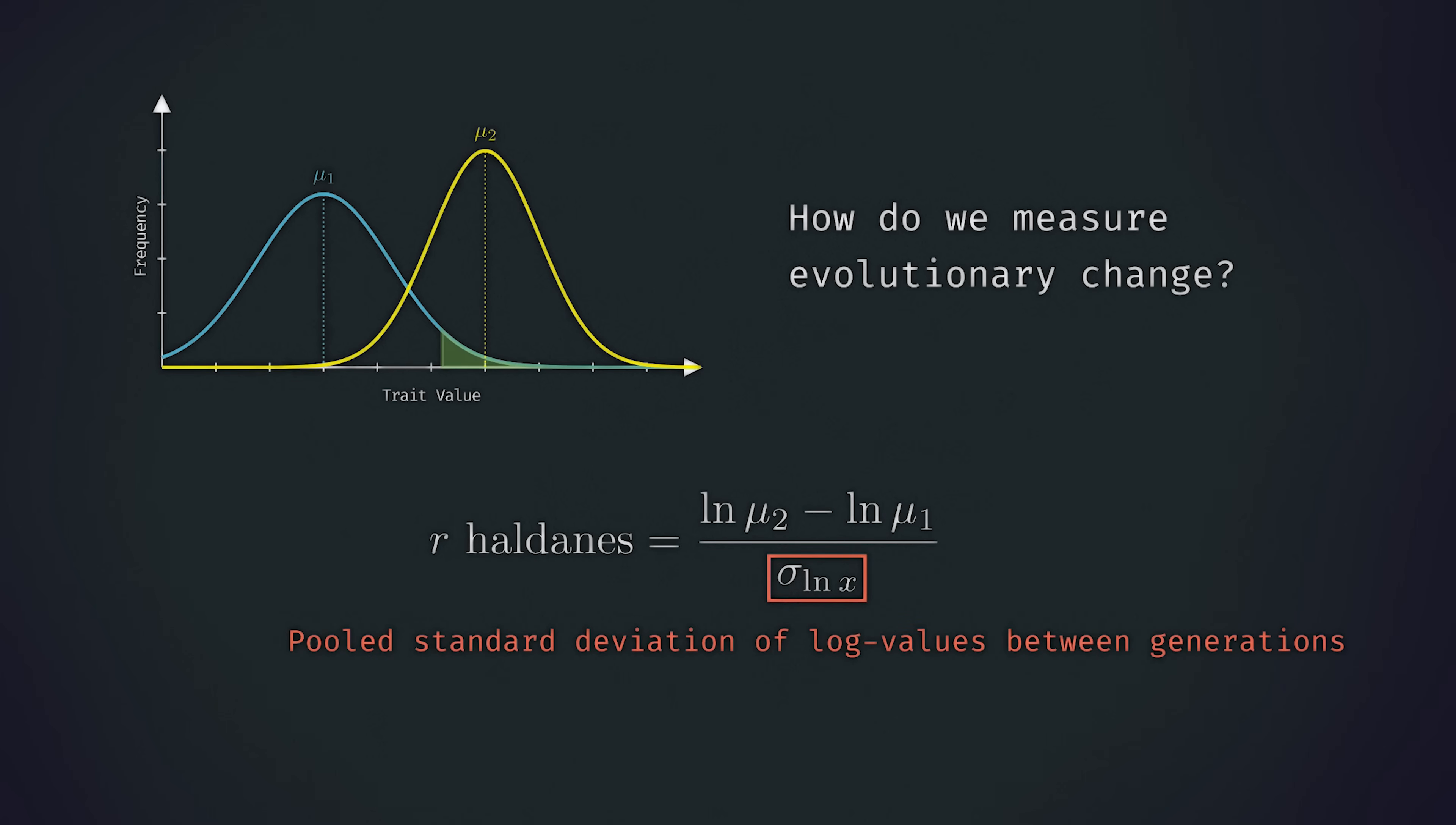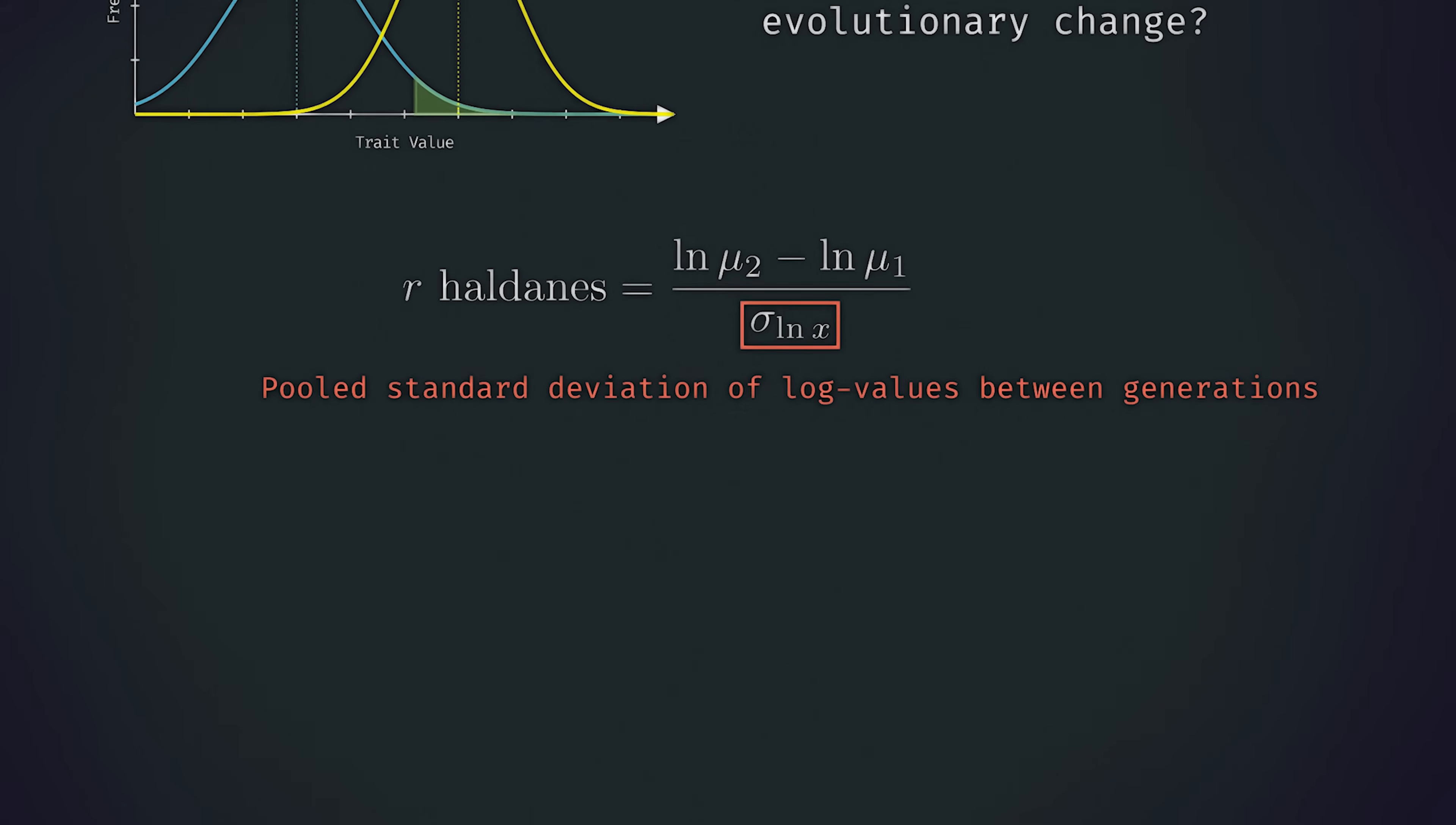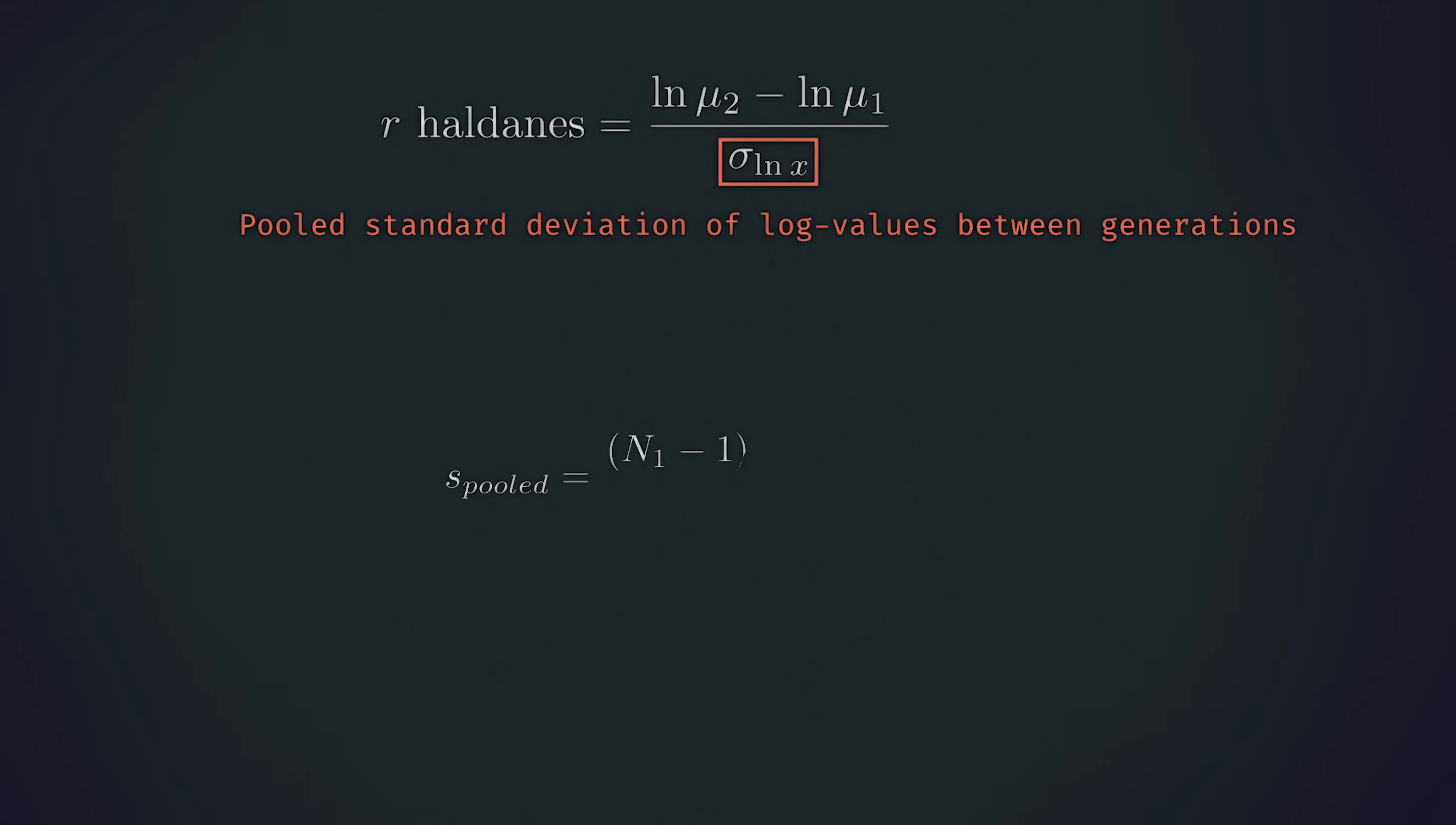This is the pooled standard deviation of the log values of the trait between generations. So let's unpack that statement. Firstly, a pooled standard deviation is actually very simple. It's just the weighted mean of the standard deviations where more weight is given to larger populations.